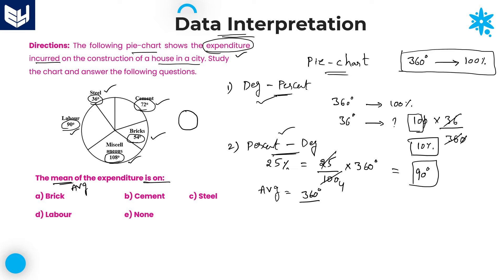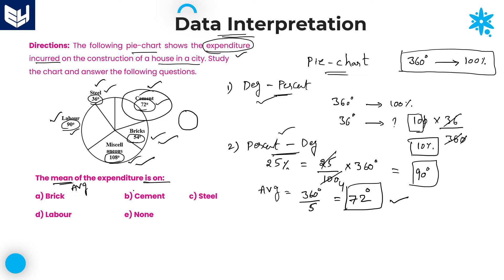So 360 degrees divided by the number of observations. Count the different categories: steel, cement, bricks, miscellaneous, and labor — total five. 360 divided by 5 equals 72 degrees. The average expenditure is 72 degrees, which corresponds to cement. Cement is the right answer — Option B.